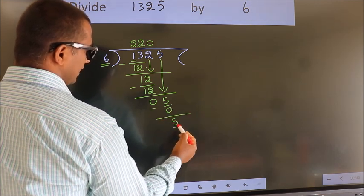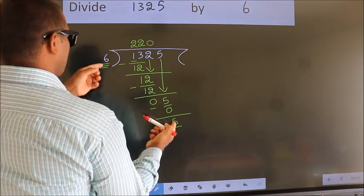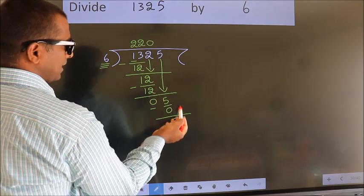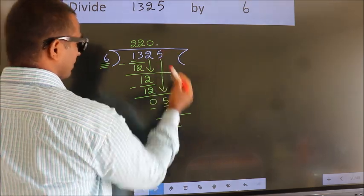We get 5. Here we have 5. Here 6. 5 smaller than 6. And we did not bring any number down. So now we can put dot take 0.